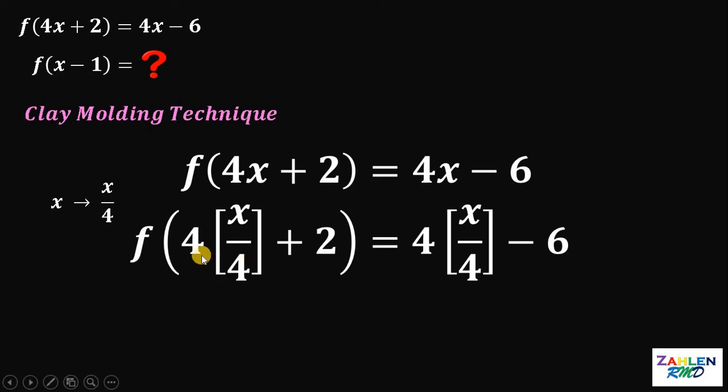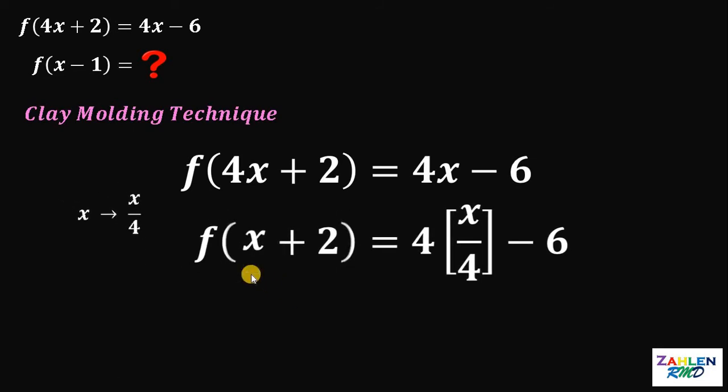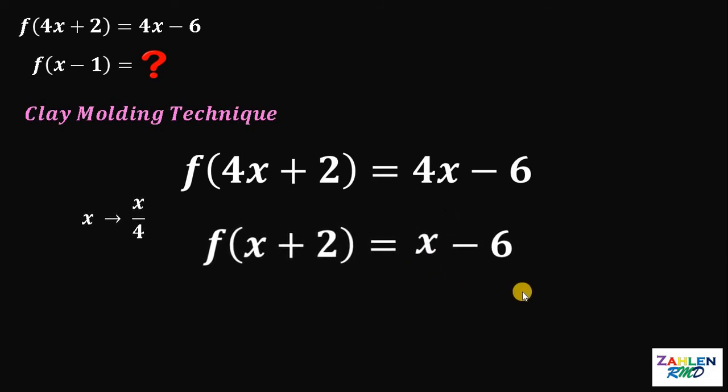Now, notice that we have 4 times x over 4. This 4 cancels out. And this is just x. And on the right-hand side, 4 times x over 4 will just give us x. So we have x minus 6. Now, we have x plus 2.